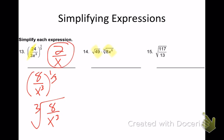Number 14 — does everybody see how these are different radicals? I have a cube root, a square root, and a cube root — I can't multiply those. I need to simplify them first. The square root of 49 is 7. The cube root of 8 — what times itself 3 times is 8? 2. The cube root of x to the 6th: 6 divided by 3 is 2, so x squared. So 7 times 2x squared — 7 times 2 is 14. Answer: 14x squared.